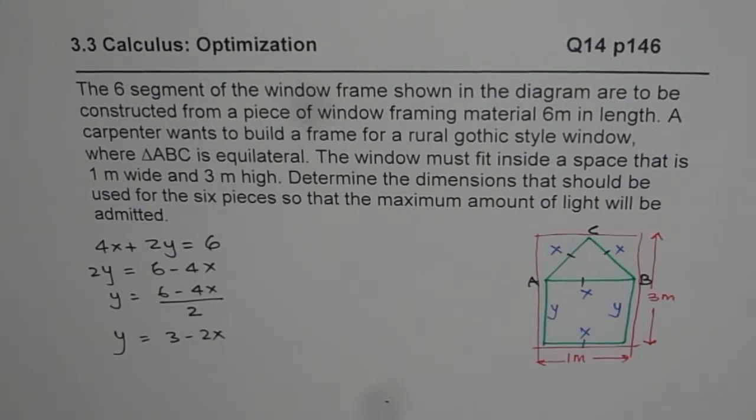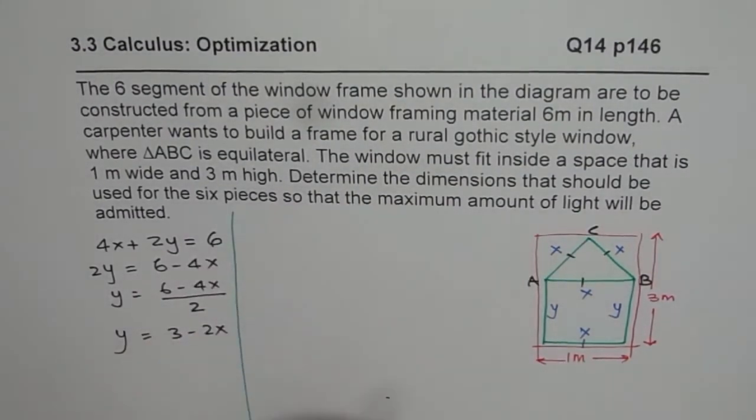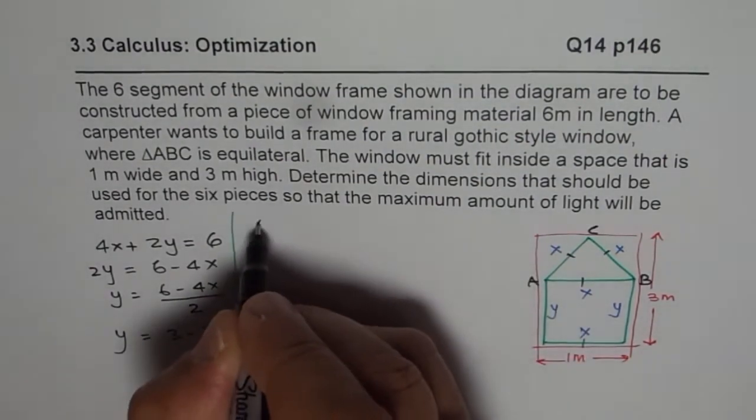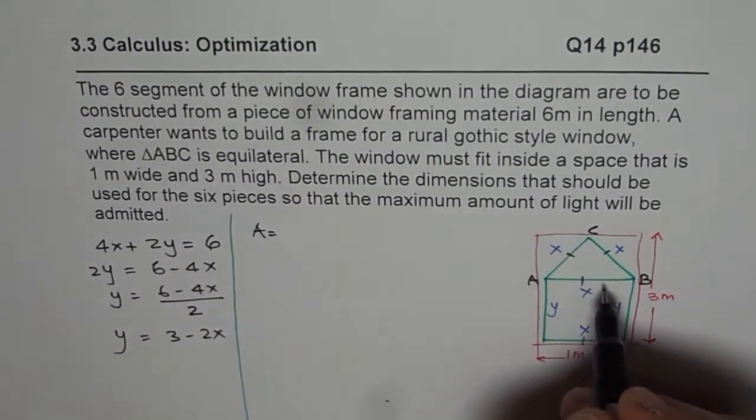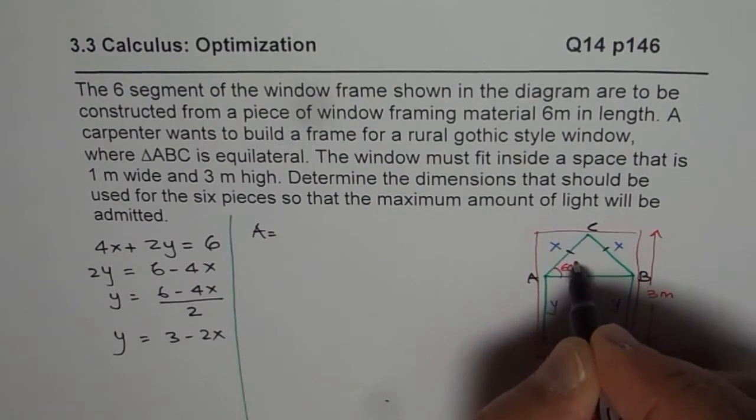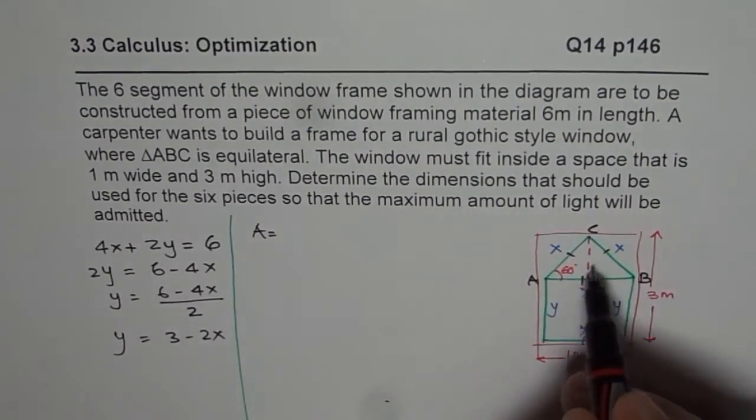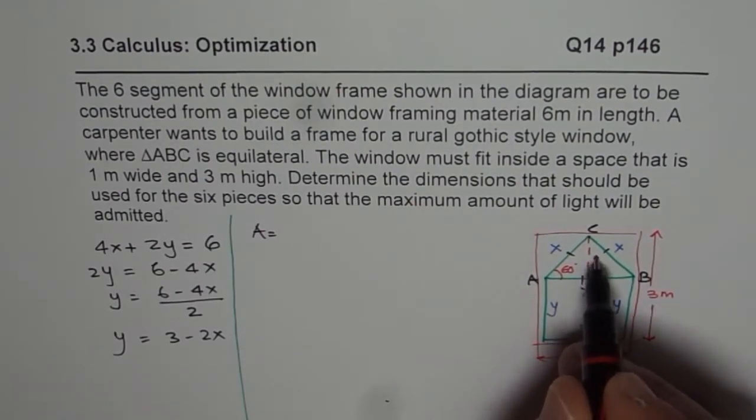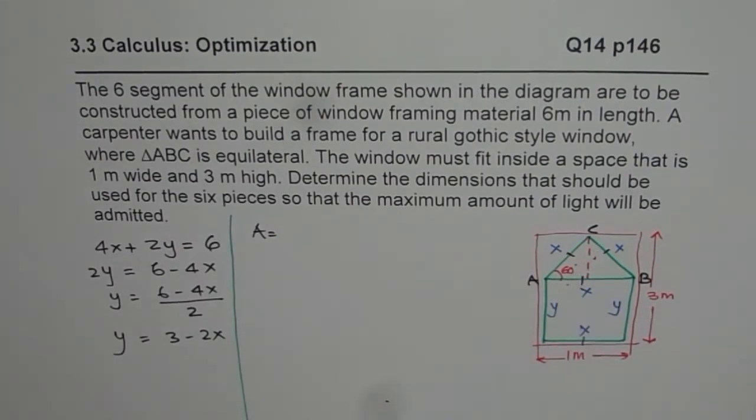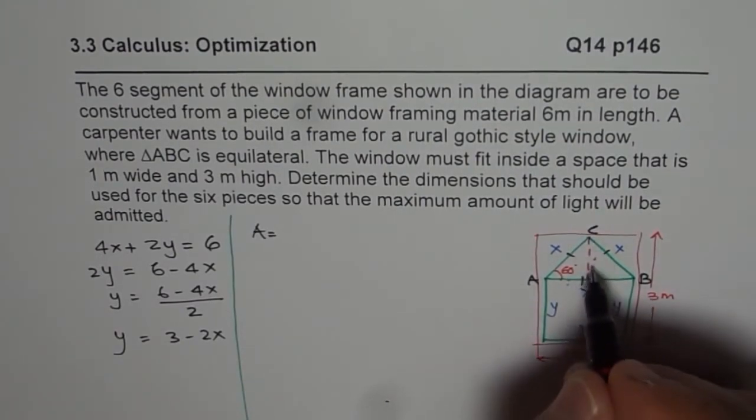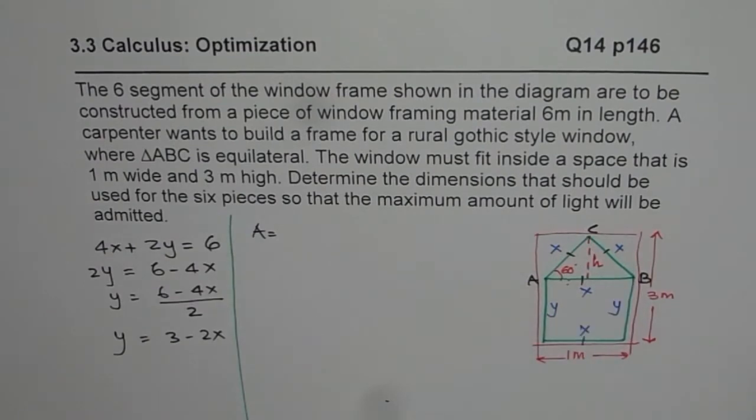We need to maximize the intensity of light. That means the area. If area is maximized, then the intensity will also be maximized. Now what is the area? This is an equilateral triangle. Remember, this is an equilateral triangle with 60 degrees. In a 60 degree triangle, the ratio is square root 3 times, square root 3 over 2. We can find height and then we can find area of the triangle.